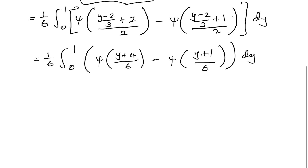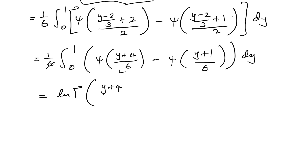We know that integrating the digamma function gives the natural log of the gamma function. When we integrate here, the inner factor of 1/6 in the argument cancels with the 1/6 constant outside upon integration, leaving us with [ln Γ((y+4)/6) minus ln Γ((y+1)/6)] evaluated from 0 to 1.